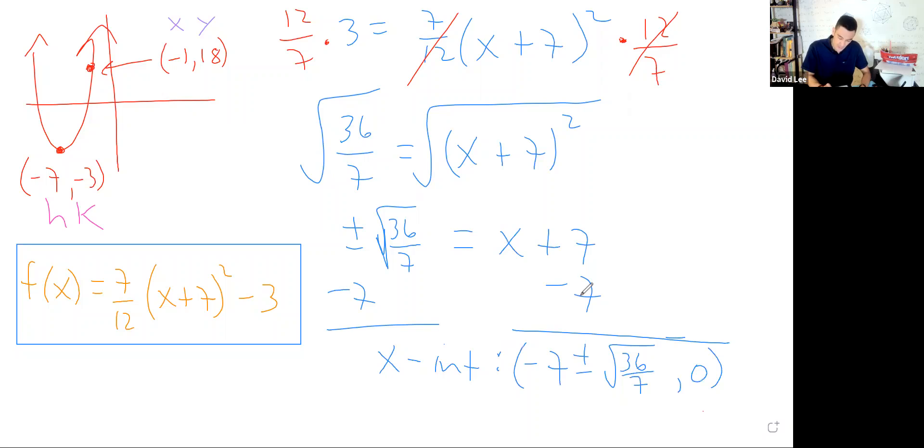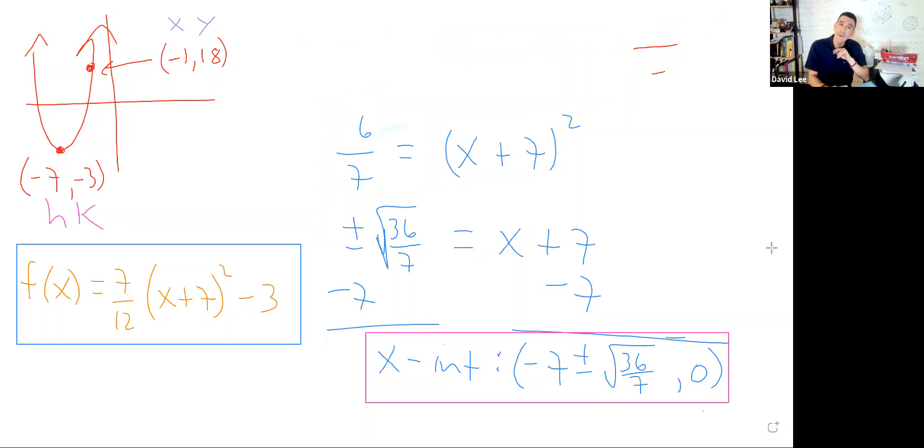Our x-intercepts would be: x = -7 ± √(36/7), or the points (-7 ± √(36/7), 0). Let me put a pink rectangle around this. After that, they wanted the domain and range. Let me erase some of this, and we can go through the domain and range, then the end behavior. That'll complete this exercise.